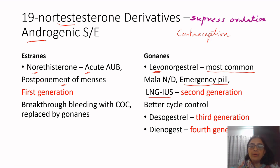Then we have desogestrel as third generation and dienogest as fourth generation gonanes. The three gonanes to remember are levonorgestrel, desogestrel, and dienogest.